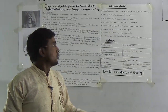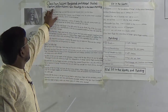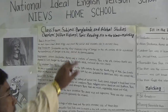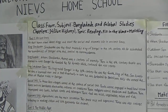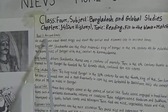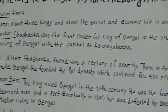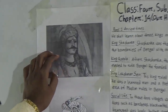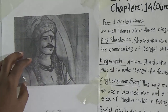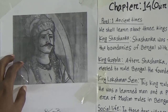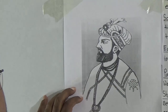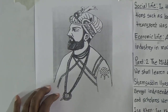Look at both. The name of our today's chapter is Our History. We know that our history has two parts. One is ancient times, another one is the Middle Age. Look at the first picture — he is King Shoshonko, who belongs to ancient times. And the second picture is about Isha Khan, who belongs to the Middle Ages.